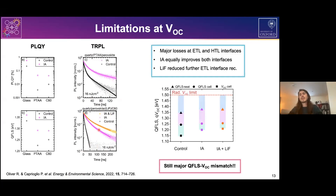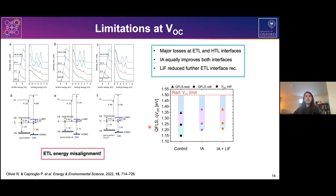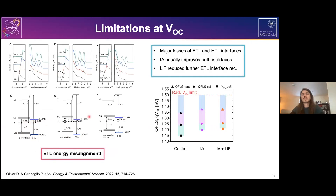Interestingly, even in quite optimized devices reaching high VOC, we found a large mismatch between the internal quasi-Fermi level splitting and the external VOC. Even optimized devices suffer from this quasi-Fermi level splitting VOC mismatch, meaning we cannot achieve the full potential the perovskite can deliver. To understand this, we performed UPS measurements on sequential deposition of C60 to reconstruct the energetic alignment at the ETL interface, finding a substantial energetic misalignment between the perovskite conduction band and the C60 LUMO, which is known to cause a significant quasi-Fermi level splitting VOC mismatch.